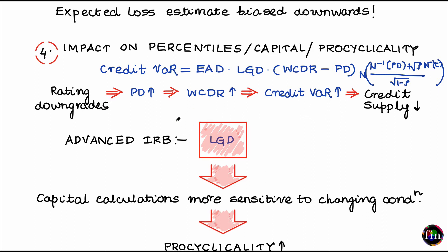Now if we assume that the bank was using the advanced IRB approach, in this approach the LGD input to the credit VaR formula is also in the hands of the bank — the bank can change the LGD input. If the bank were to incorporate this positive correlation between PD and LGD, then as the PD starts to increase, the bank will also increase the LGD input. When the LGD input goes up along with the PD and the worst-case default rate going up, the credit VaR increases even further.